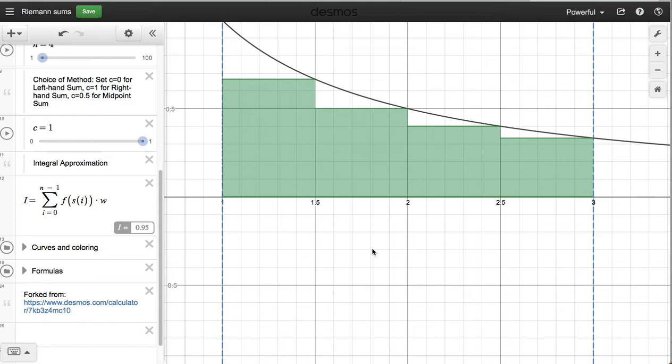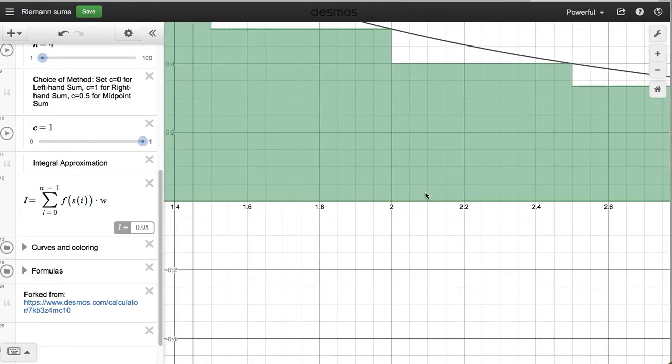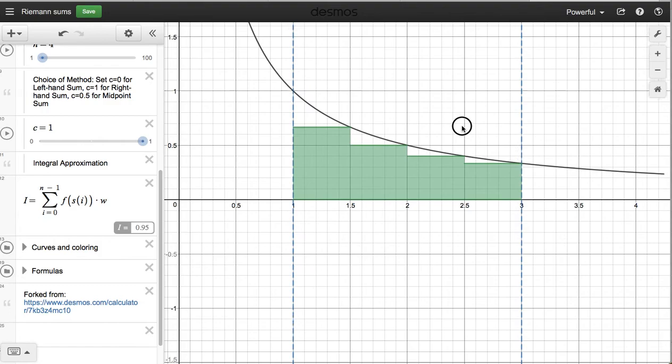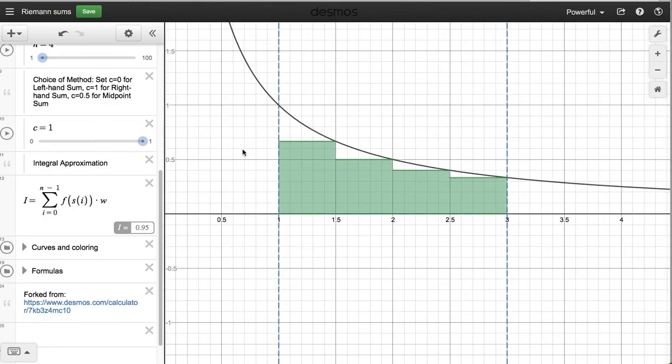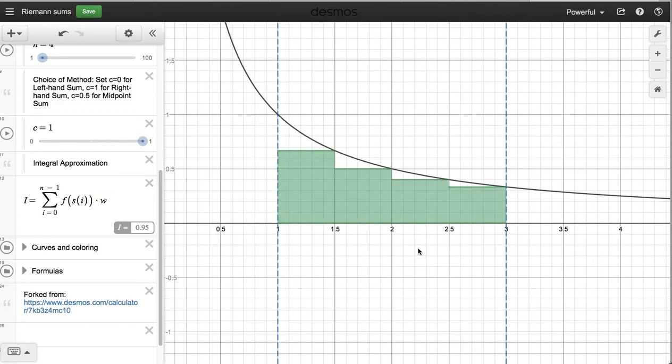And you can see Desmos made that incredibly easy. Not only does it do the calculations for us, but it also draws the rectangles. So we get an idea of what that Riemann sum actually looks like. You can see there's white space here under the curve. So our approximation is less than the true value. But the value here is 0.95, and that is the expected answer for a Riemann sum with four rectangles using right-hand endpoints.